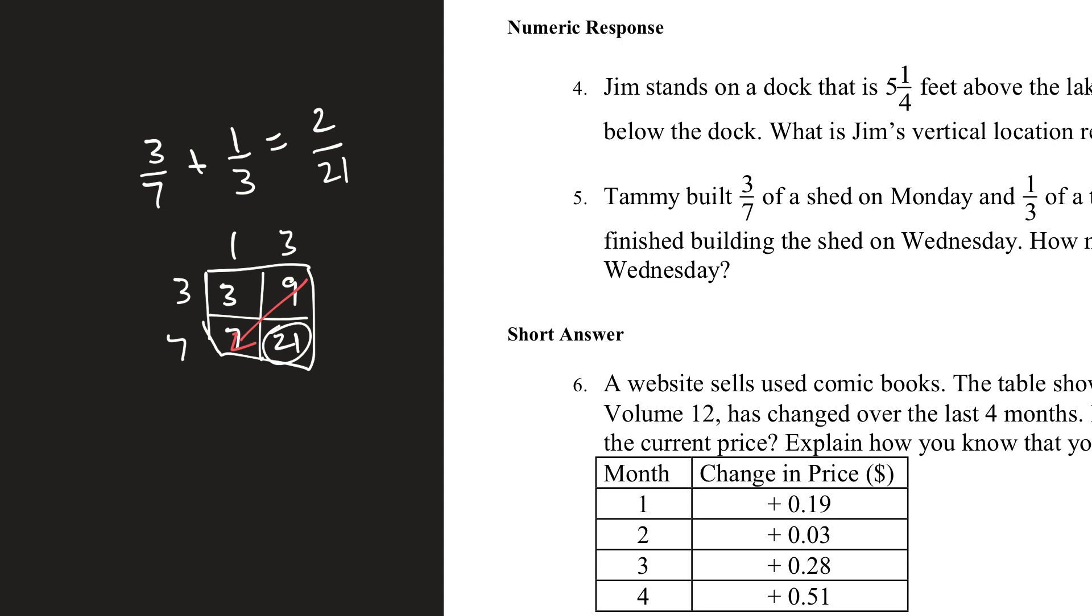So, she built that much, which is pretty crazy. Oh, I subtracted. Why would I subtract? I was wondering, like, 2 out of 21, that's not very much. Now, here, you actually have to add them, right? I subtracted them. So, 9 plus 7 is 16. So, 16 out of 21. That's how much she built.